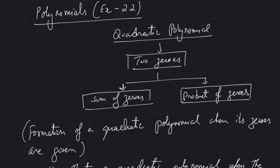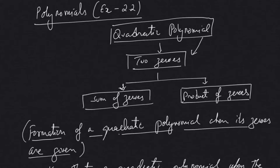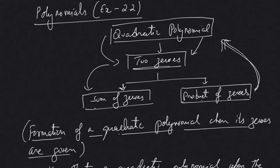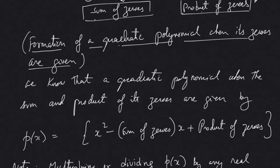Welcome back friends, let's continue with Exercise 2.2. This exercise is about quadratic polynomials — a quadratic polynomial will have two zeros, and how to find the sum of the zeros and product of the zeros. What we will learn in these problems is another step: how to form a quadratic polynomial when its zeros are given. We first had a quadratic polynomial, studied how to find its zeros, and how to get the sum and product of the zeros. Now, from the zeros or sum and product of zeros, we will find the quadratic polynomial.